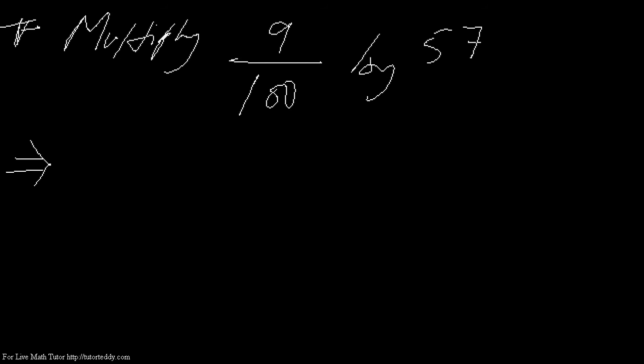There are some specific methods which will make it easier to solve this kind of multiplication problem. Let me write 9/100 at first. Wait, let me take 99 instead—that will be easier for you to understand. So we write 99/100 times 57.